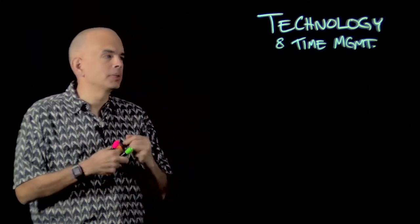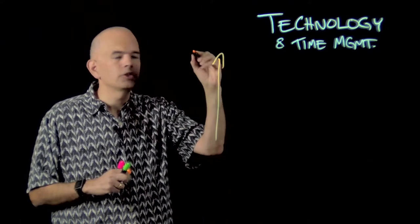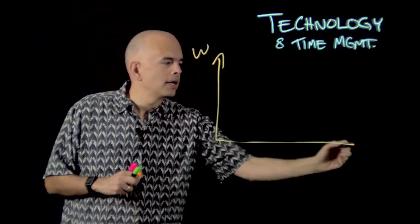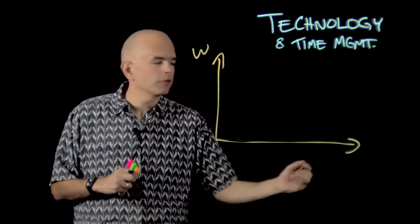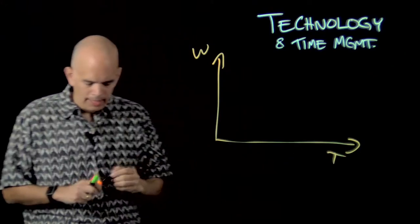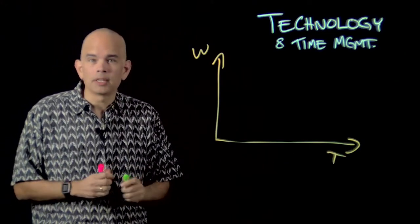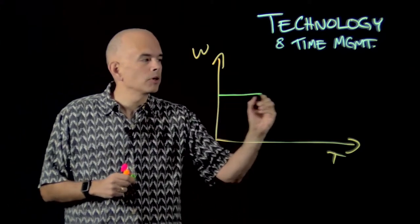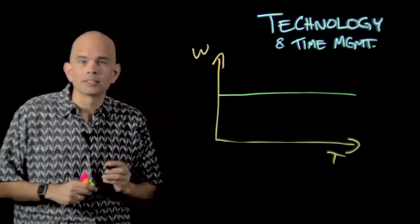For any task that you're doing, there is a certain amount of work that you have to do, and you do that work in a given amount of time. Probably given the way that you're used to doing things, the amount of work per time is pretty much constant, right?